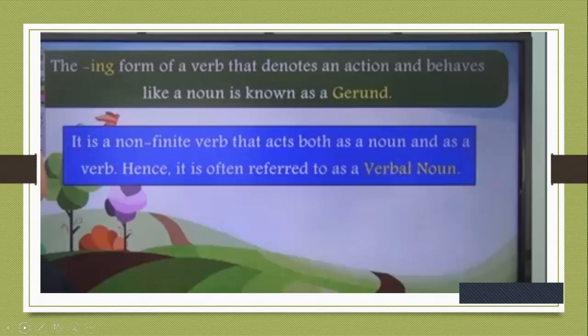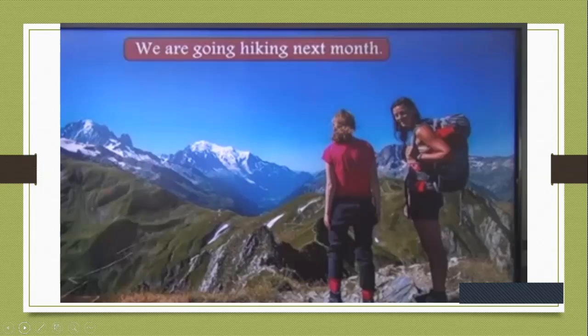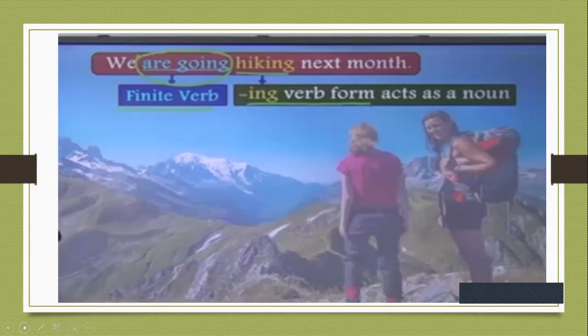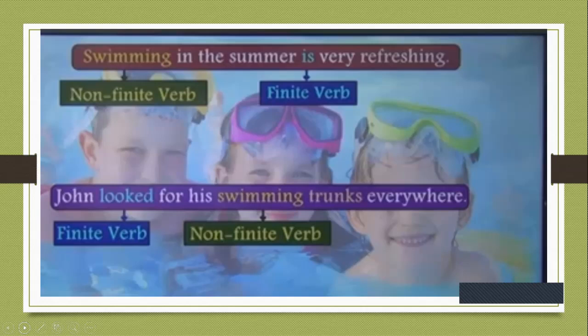More examples: 'Swimming in the ocean has been her passion since she was five years old' — we are talking about swimming as the subject. 'We are going hiking next month' — going is finite, and hiking is non-finite, that is also a gerund — it's a verb with -ing form acting as a noun. 'Swimming in the summer is very refreshing' — swimming is a non-finite verb; swim is the verb, -ing is tucked to its tail, so that is a gerund. 'John looked for his swimming trunks everywhere' — looked is finite (simple past), swimming doesn't change, so it is non-finite.